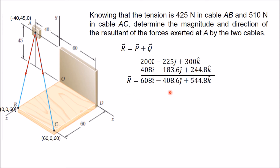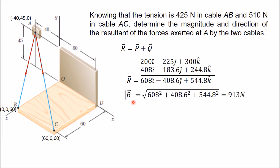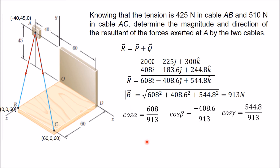The magnitude of the resultant is calculated as the square root of 608² + 408.6² + 544.8², which comes out to 913 N.